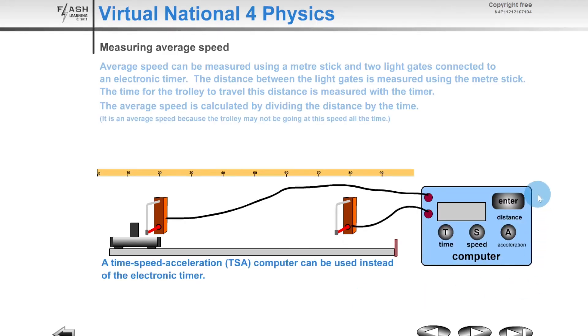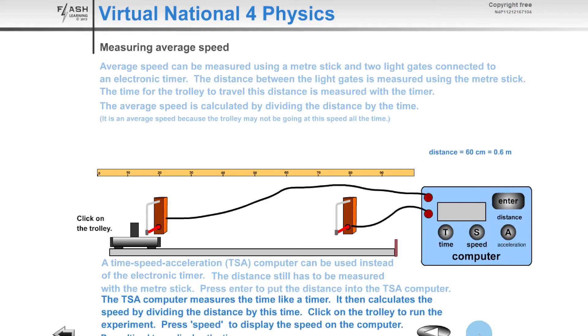That was just a simple electronic timer, but you can also use something in the physics lab called a TSA timer, which stands for time, speed, acceleration. It can measure all of these things. You could actually just set it up to measure the average speed for you, but then you wouldn't be practicing the equation, which is important. Using the TSA timer, you could do the same as before but this time enter the distance between the two light gates into the timer itself, 0.6 meters, and click enter.